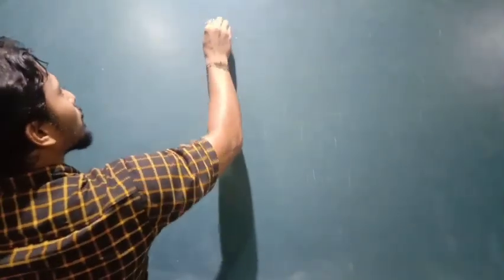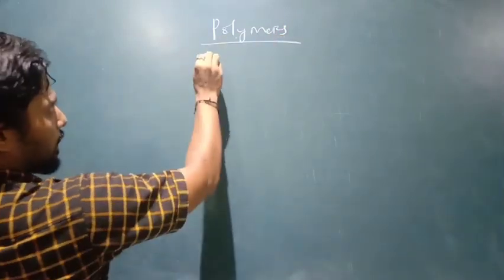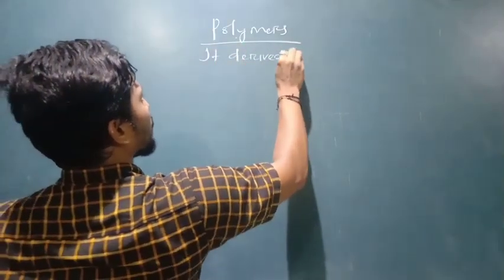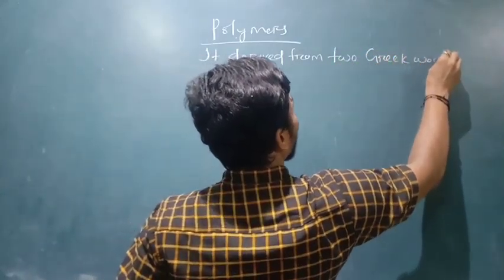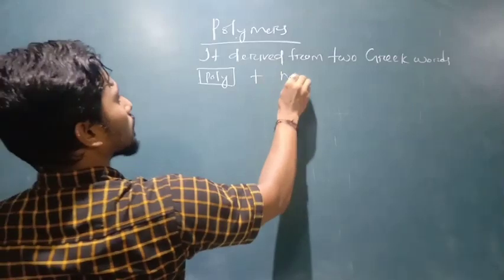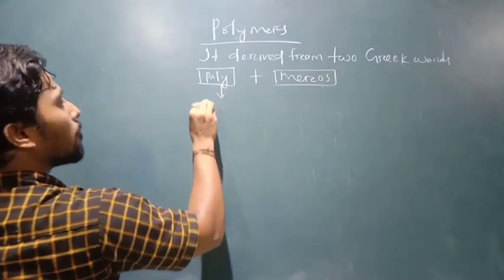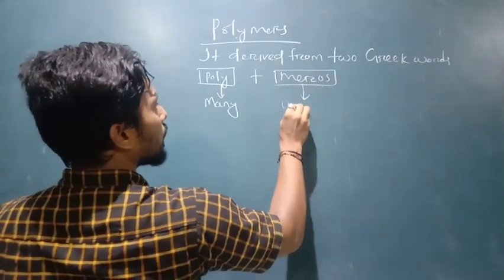Let me get pen and paper ready. In the traditional way, we deal with the polymer chapter — it is the 15th chapter. The word polymer is generally derived from Greek words: 'poly' and 'moros.' Poly means many, and moros means units or parts.